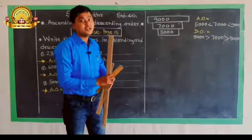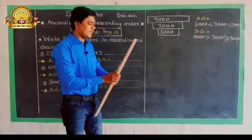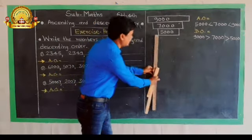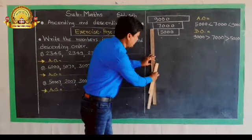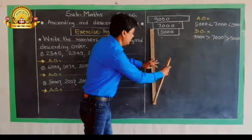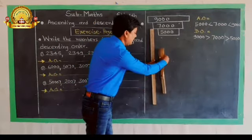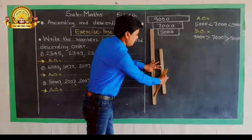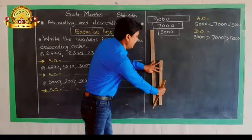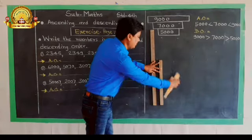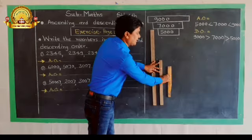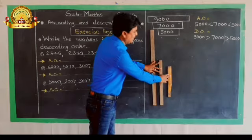Now this is descending order. In descending order, the biggest ruler comes first, then the middle one, and then the smallest one comes last. So descending order is arranged from biggest to smallest.